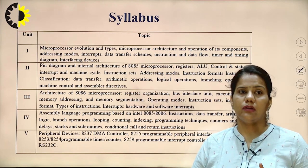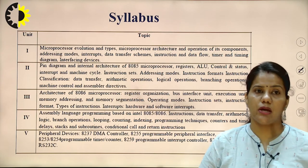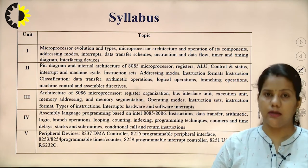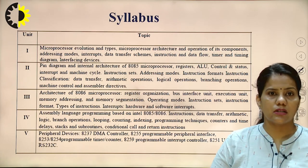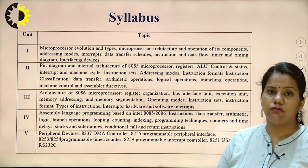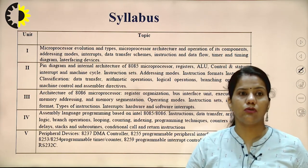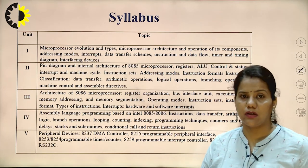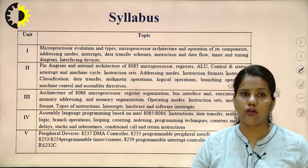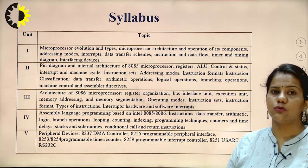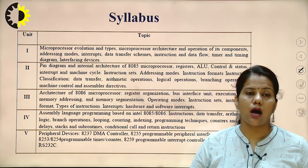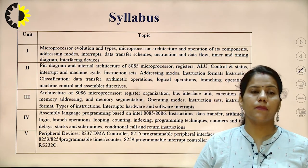In the fourth unit, we will study assembly language programming based on both the 8085 and 8086 microprocessors, covering all instructions: data transfer, arithmetic, logic, branch operations, looping, counting, indexing, and so on. In the last unit, we will talk about peripheral devices — the 8237 DMA controller, 8255 programmable peripheral interface, 8253/8254 programmable timer or counter, 8259 programmable interrupt controller, and 8251 USART and RS232C. We will learn how to interface all these devices with our microprocessor.